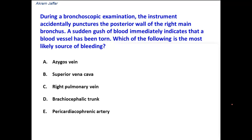During a bronchoscopic examination, the instrument accidentally penetrates the posterior wall of the right main bronchus. A sudden gush of blood immediately indicates that a blood vessel has been torn. Which of the following is the most likely source of bleeding?